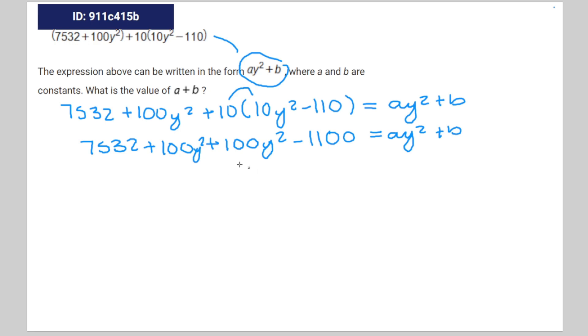Combine like terms, you're going to get 200y squared plus 6,432 is equal to ay squared plus b.